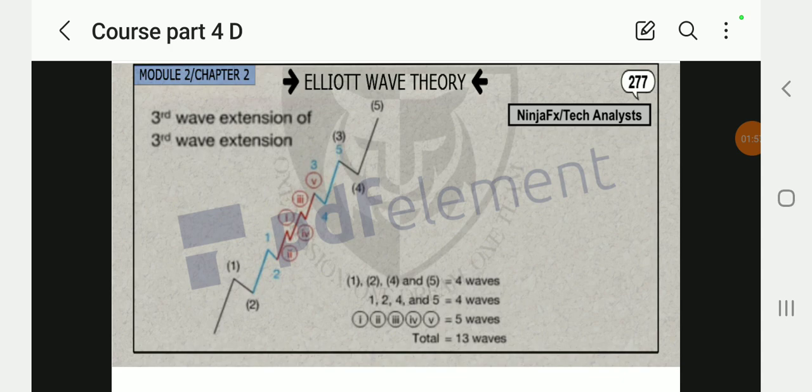You can see here guys: one, two, four, and five—four waves; one, two, three, four, five—five waves; one, two, three, four, five—five waves. Total: thirteen waves all in all, as demonstrated right now.